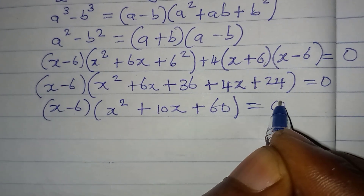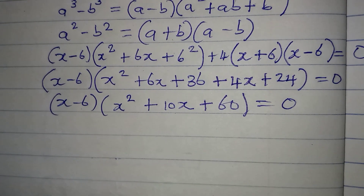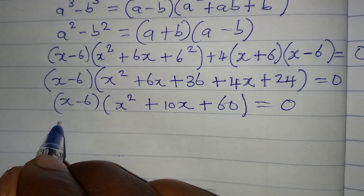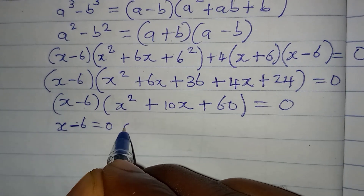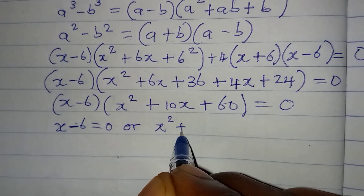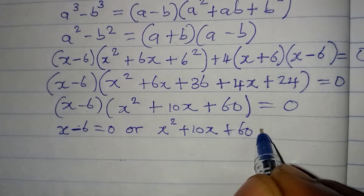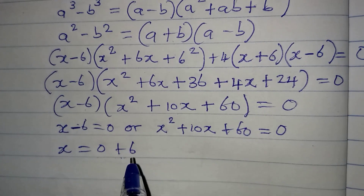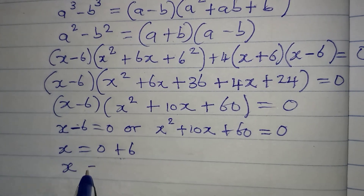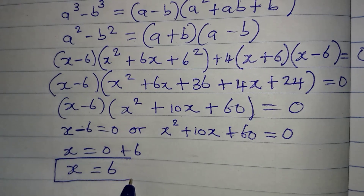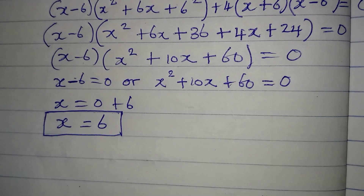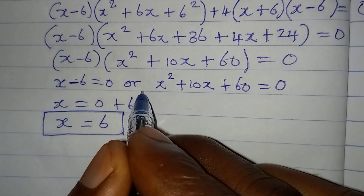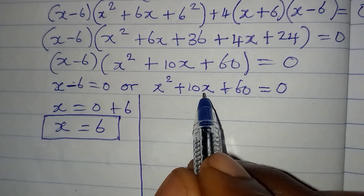So we have x minus 6, times x squared plus 10x plus 60, equals zero. Let's apply the zero product rule: it is either x minus 6 equals zero, or x squared plus 10x plus 60 equals zero. From the first factor, x equals 6, and this is a real solution.